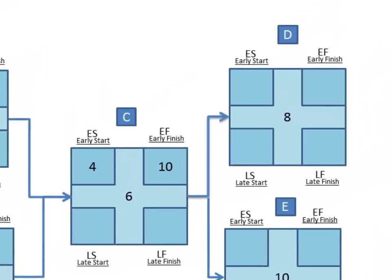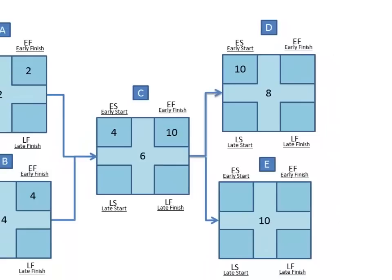So now we're up to task D. D is waiting for task C to finish, so the earliest D can start is day ten. This holds true for E, since it too is waiting on the completion of C, so let's put a ten in the early start for E.